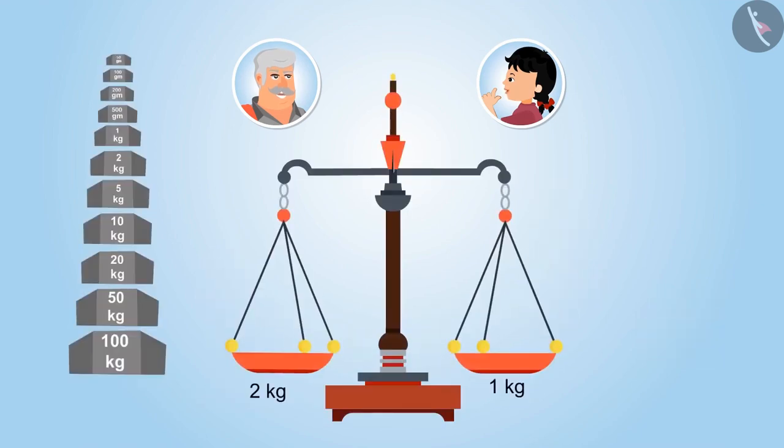Yes, absolutely right. In the similar way, in this weighing scale, the side carrying more weight moves downwards, while the side carrying less weight moves upwards, because it is lighter than the other. Yes, uncle, I have understood, the side having more weight will move downwards.